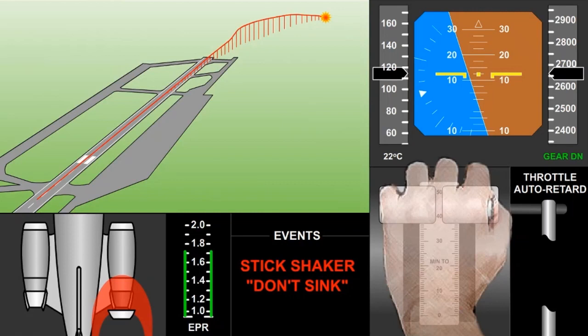Investigators believed that the crew was unaware that the opening of the right engine reverser was causing the thrust lever to be retarded to idle. The third time that the co-pilot fought to restore thrust, a linkage in the auto-retard system broke and freed the thrust lever to move forward without resistance.